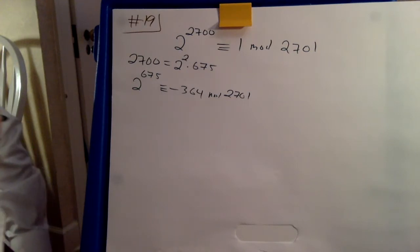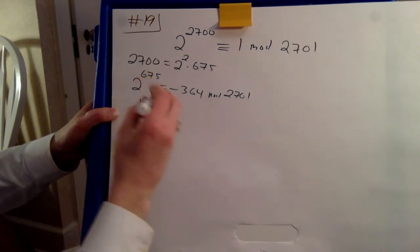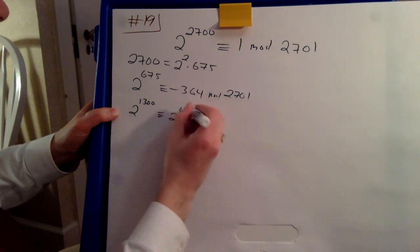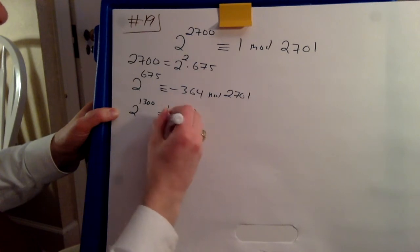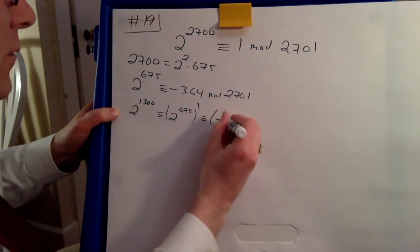So now let's look at the next power, 2 to the 1350. So note that this is 2 to the 675 squared.